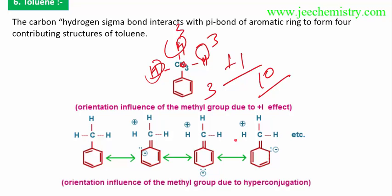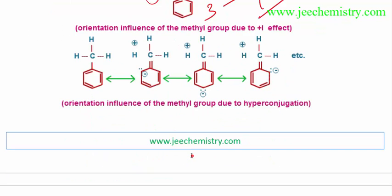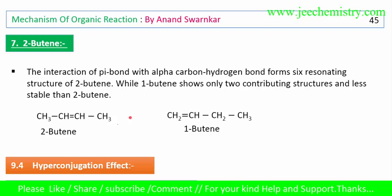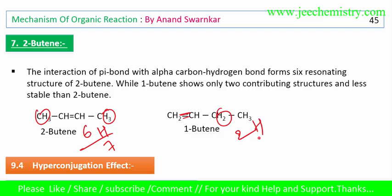Now but-2-ene: it has three hydrogens on one side, three on the other — six contributing structures plus one aliphatic structure — but the double bond also has two hydrogens, giving six plus one equals seven contributing structures. Three structures from one side plus one, two plus one — six hydrogens give more hyperconjugation.